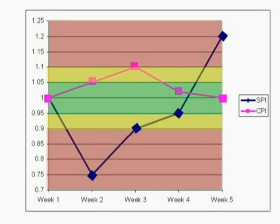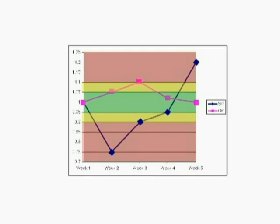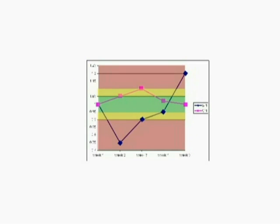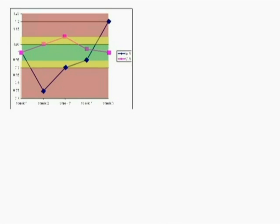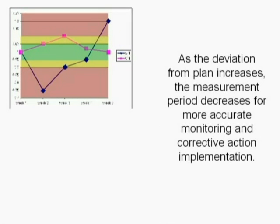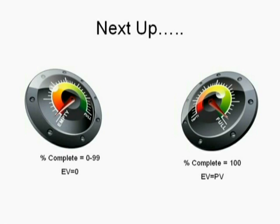Setting thresholds at 5% and 10% for EVM calculation periods and escalation triggers allows the project manager to not only report project status, but also what actions are being taken to get the project back on track and why. In the next video, we'll talk about how to measure completion percentages to ensure accurate earned value calculations.